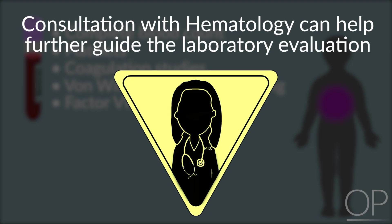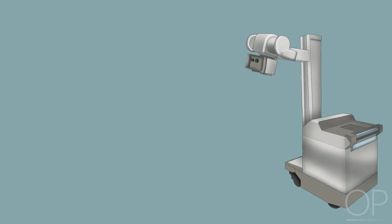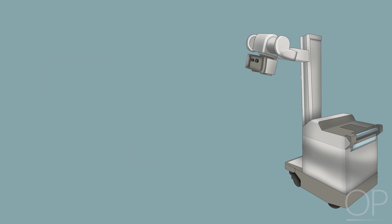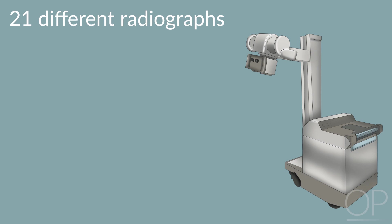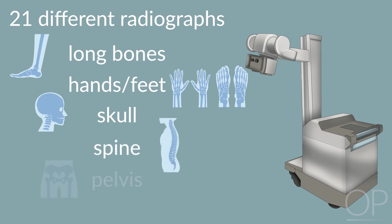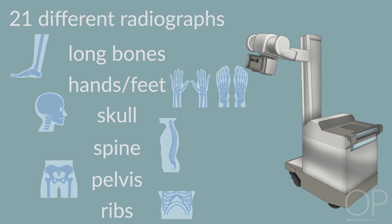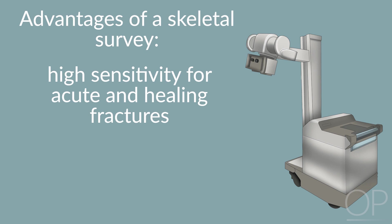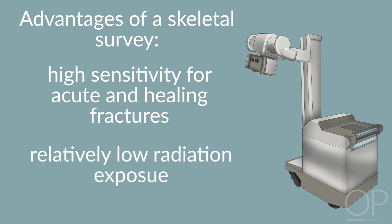Radiographic imaging is also an essential component of the workup of suspected physical abuse. A skeletal survey should be obtained in all cases of suspected child abuse in children less than two years of age. A skeletal survey consists of approximately 21 different radiographs, including images of the long bones, hands, feet, skull, spine, pelvis, and ribs. The advantages of a skeletal survey are high sensitivity for acute and healing fractures, as well as relatively low radiation exposure.